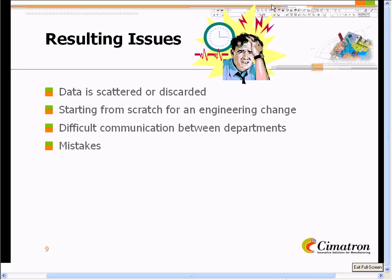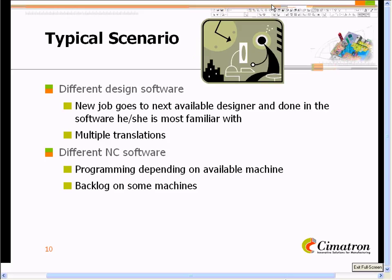What does having data scattered in different locations mean? In many cases, if we go through an engineering change, a lot of these departments would be starting from scratch. It's going to be difficult to communicate between departments because we're not all looking at the exact same data. This, of course, lends itself to mistakes — is the task being completed the same in all the departments as it needs to be?